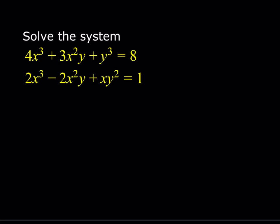So we have this system: 4x³ + 3x²y + y³ = 8, and 2x³ - 2x²y + xy² = 1. We're going to solve for x and y. This is a system in two variables, so we should be able to solve it by algebraic means. But there's something that makes this system rather special - if you look at the terms carefully, all of them are cubic. So we're going to use a substitution technique, replacing y with mx, where m is a constant, so we're assuming y and x are proportional.